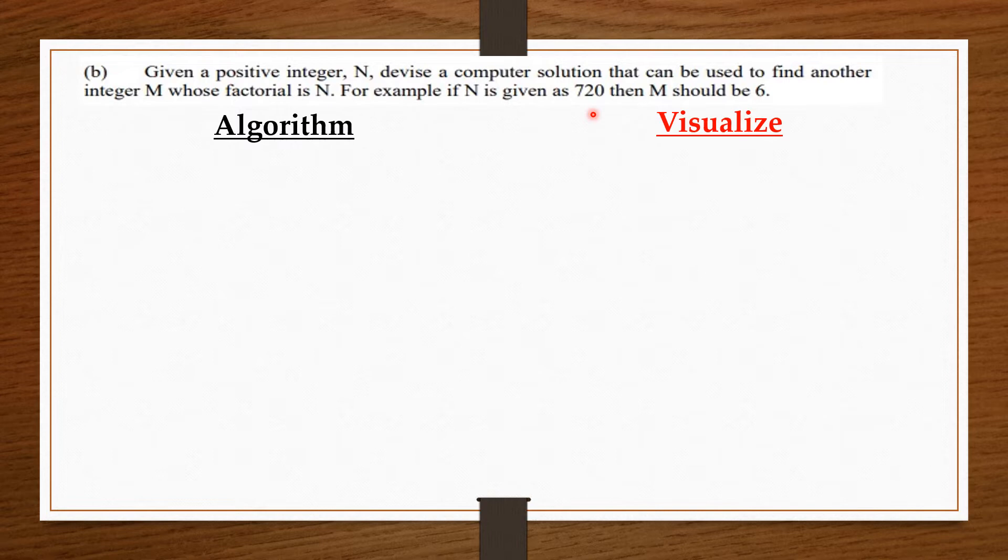So, let's take the algorithm. We are going to ask the user to input the value of N. Then we are going to set these two variables to 1. So, we say fact equals 1 and M equals 1. I will explain as we go along.